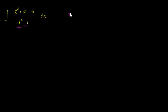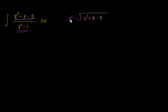Let's take x squared minus one and divide it into x squared plus x minus five. Looking at the highest degree terms: how many times does x squared go into x squared? It goes one time. One times x squared minus one is just x squared minus one. Now subtract that from the original expression — taking the negative gives us negative x squared plus one. The x squared terms cancel, leaving us with x, and negative five plus one is negative four, so we have x minus four left over.